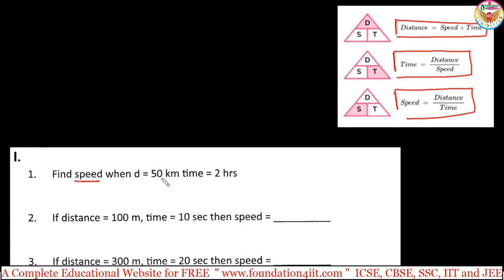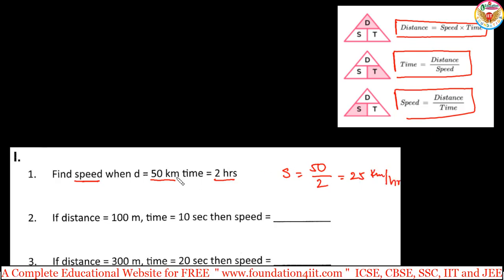First example: find the speed when distance is 50 kilometers and time is 2 hours. Speed equals distance by time, so 50 divided by 2 equals 25. We write the units as kilometers per hour. So if a vehicle travels 50 kilometers in 2 hours, it covers 25 kilometers in 1 hour — that is, 25 kilometers per hour.